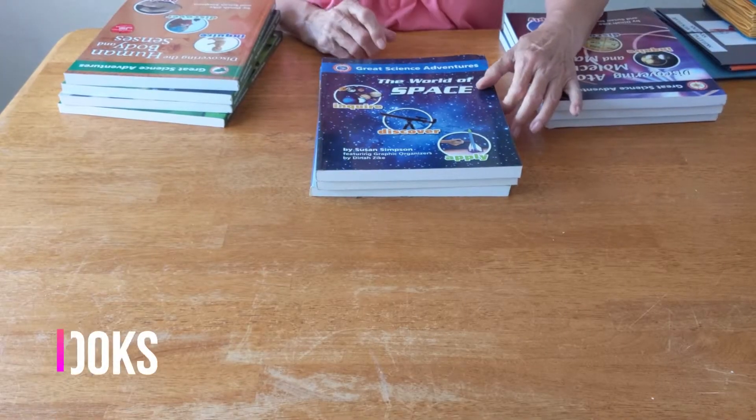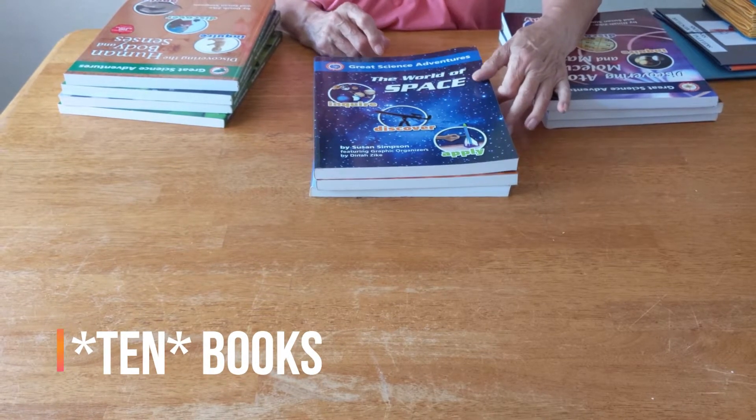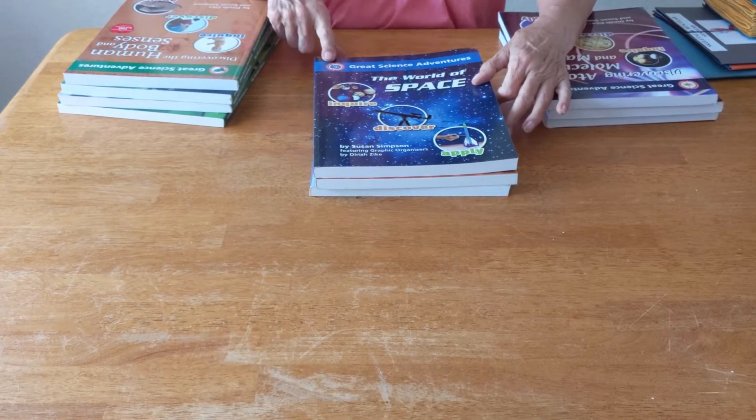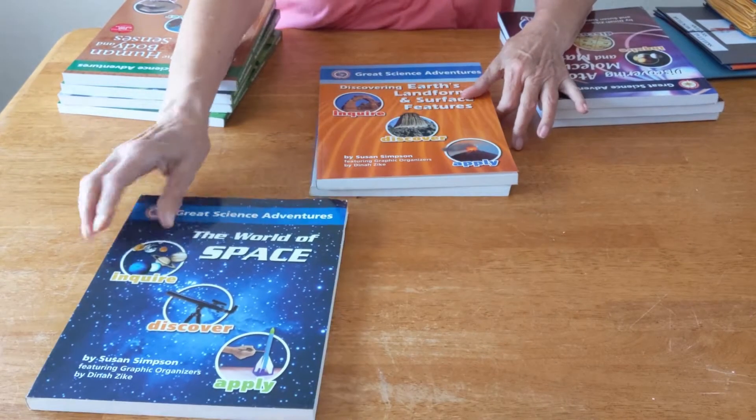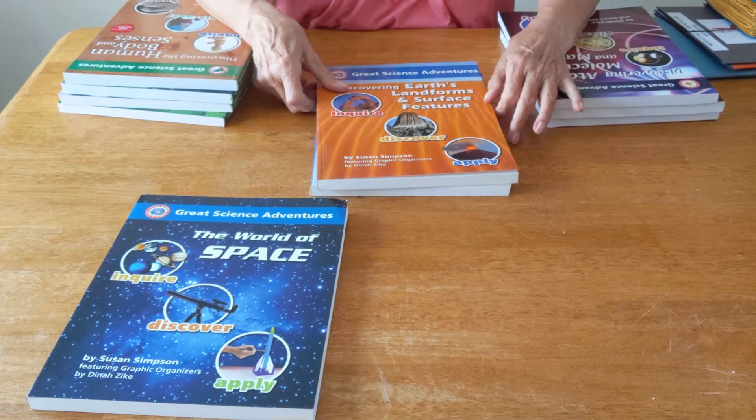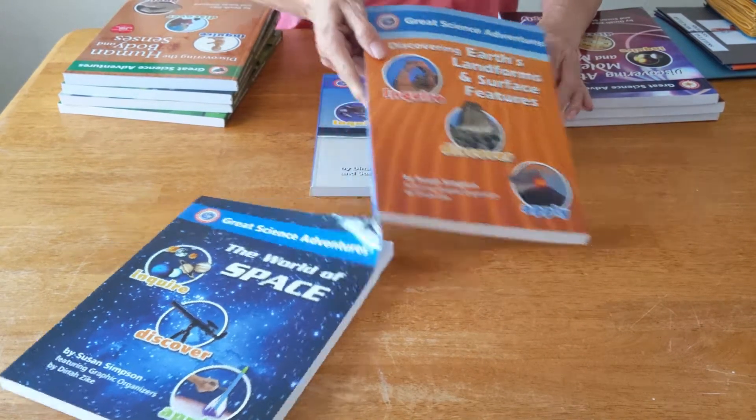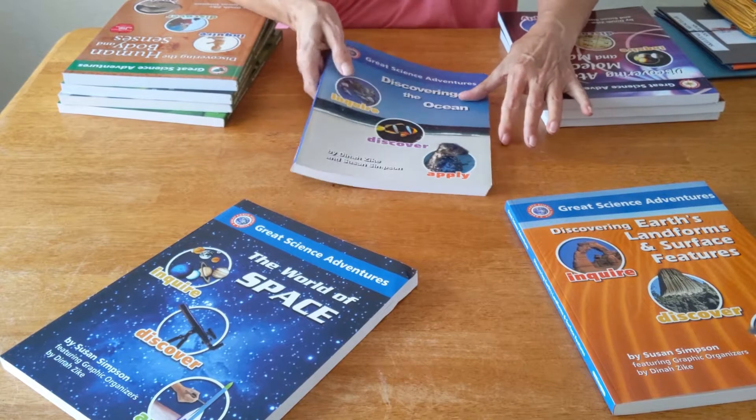Currently we have eight books available in our Great Science Adventures. In the Earth Sciences we have The World of Space, Discovering Earth's Landforms and Surface Features, and Discovering the Ocean.